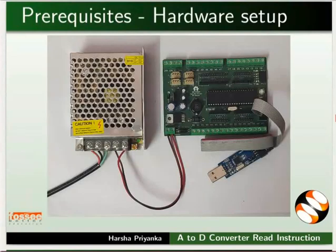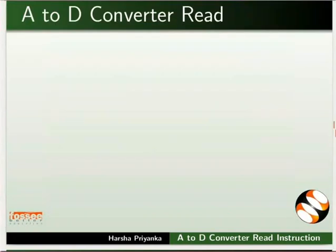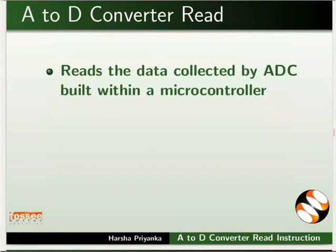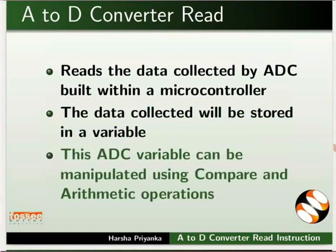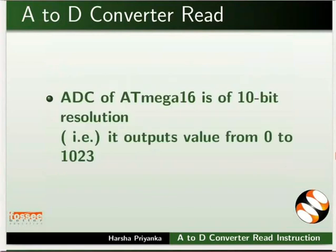Connect SMPS and USB ASP to the Main Board as shown in the picture. Keep these connections throughout this tutorial. This instruction reads the data collected by ADC built within a microcontroller. The data collected will be stored in a variable. This ADC variable can be manipulated using compare and arithmetic operations. The ADC of ATmega 16 is of 10-bit resolution, that is, it outputs values from 0 to 1023.